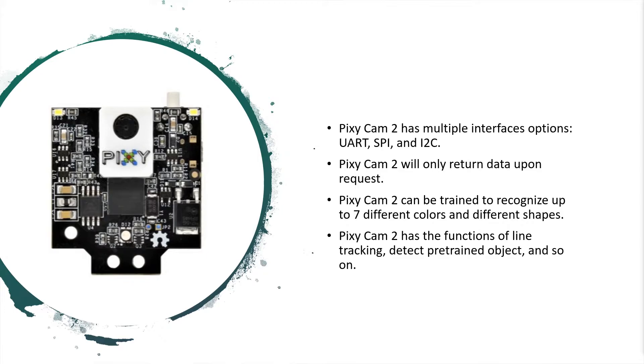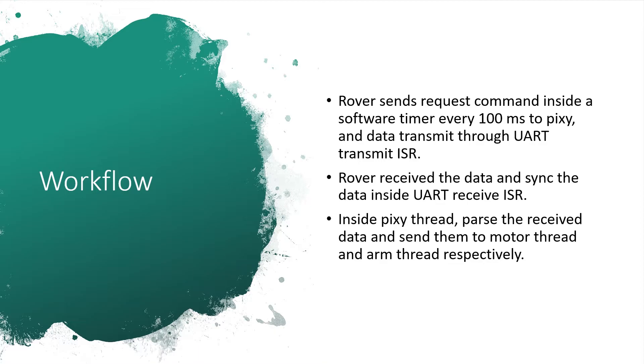I use UART interface to communicate with Pixie. The baud rate I chose is 115 kilobits per second. In our project, I'm only using one command to get all the useful information, which is the getBlocks command. This command asks for all the blocks Pixie detected in a frame. The data contains the color signature of detected objects, the height and width of the object in pixels, center of each block in pixels, and so on. After I receive the useful information, I will parse them into two entries: directions and signatures. Direction is for checking if the object is in the center of the frame, and signature is for color detection. Then I will send them to the motor thread and arm thread respectively, so that the motor can adjust its direction and the arm can do the classification.